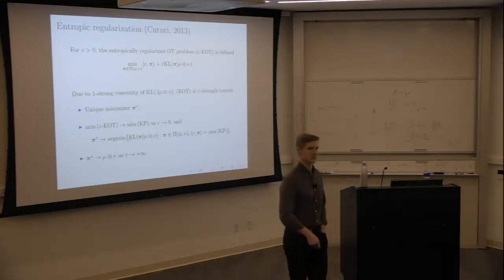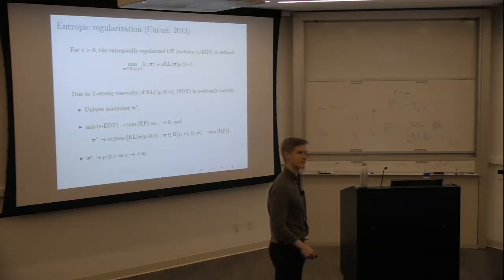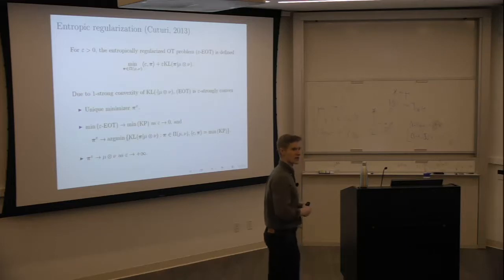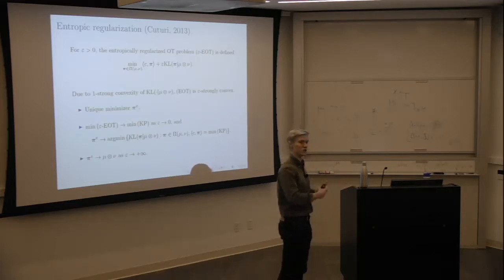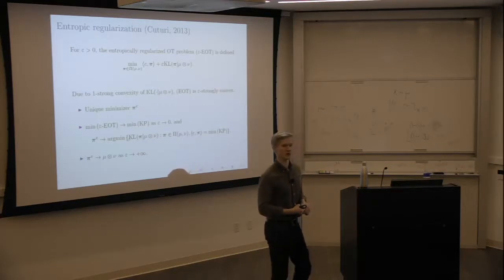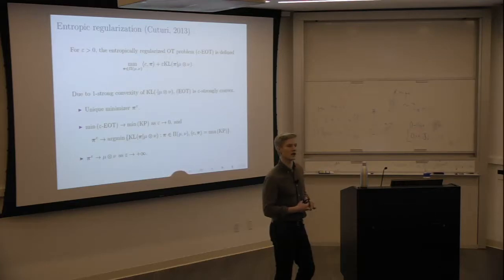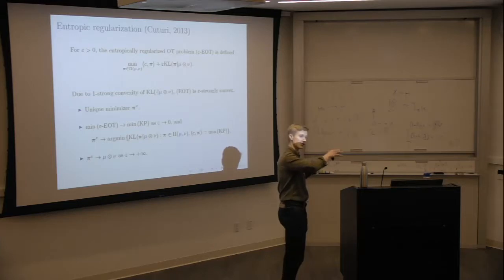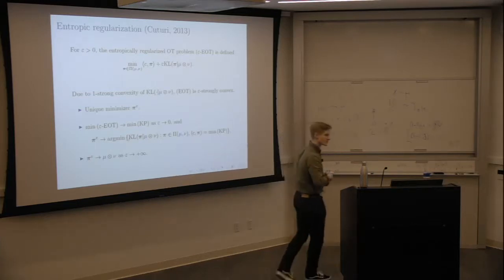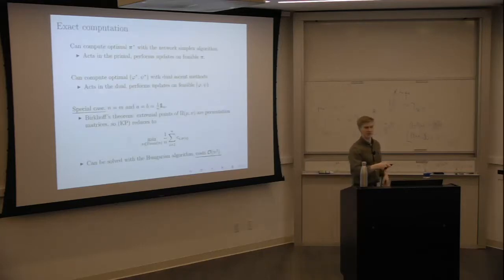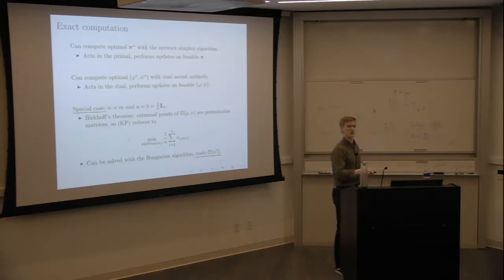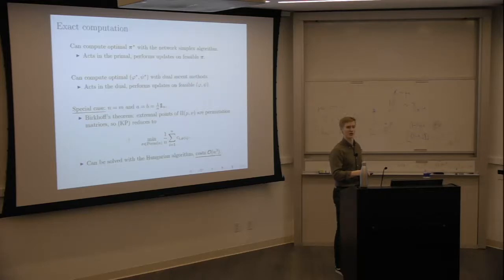Under quite weak conditions we can establish that the dual and the primal attain the same value — there's no duality gap. The Hungarian algorithm is in fact a dual ascent method. This matching problem here is also a special case of the assignment problem: for each value of i, we attach a unique value of j, which defines a map. You can think about a permutation as a map between one set of indices and another.